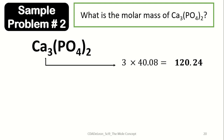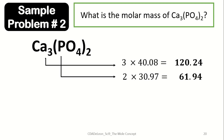If the given compound has a subscript, we just need to distribute that subscript to its respective elements. So the two is applied to phosphorus and oxygen. The number of phosphorus atoms in calcium phosphate is equivalent to 2, so 2 multiplied by the atomic mass of phosphorus, which is 30.97, is equal to 61.94.